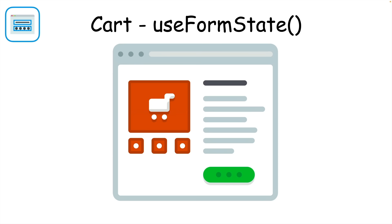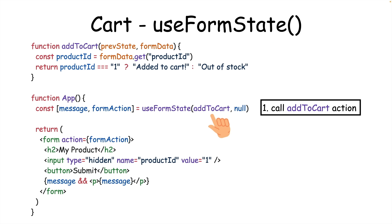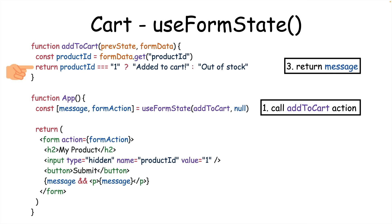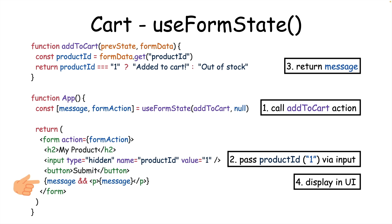A more advanced use case for useFormState is an add-to-cart button for an eCommerce app. You pass an add-to-cart action to useFormState. The product ID is on a hidden input, which is passed to form data when the form is submitted. Within the add-to-cart function, you use that ID to check if the product can be added to the cart, and finally return a message to the user telling them whether the operation was successful or not.